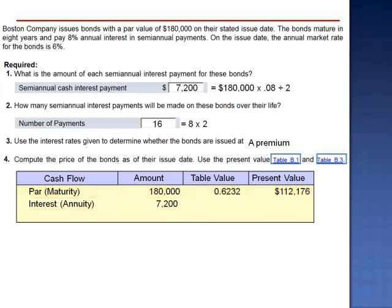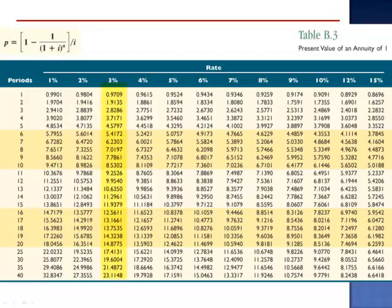To calculate the present value of the series of payments, the annuity, we go to the present value of an annuity table. We go to the intersection of the semi-annual market rate, 3%, and n equals 16. And we see the factor of 12.5611.